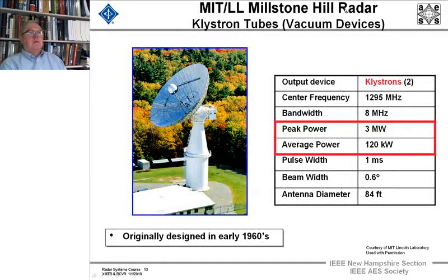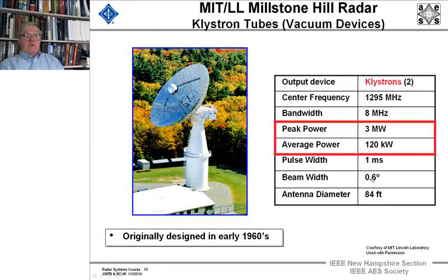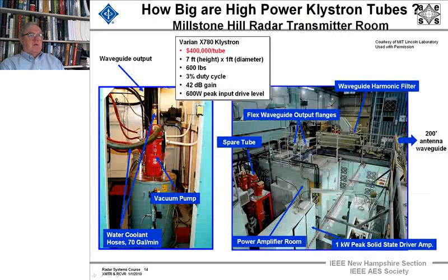Here's the Millstone Hill range radar, designed in the 1960s — an earlier version of it was the first radar to detect Sputnik 1 as it passed over the United States. This system uses two klystrons, operates at L-band with a bandwidth of 8 MHz, an average power of 120 kilowatts — an eighth of a megawatt — a pulse width of a millisecond, beamwidth of 0.6 degrees, and a dish diameter of 84 feet. The L-band version was designed in the early 1960s, and I believe there was a UHF version that existed before it was upgraded.